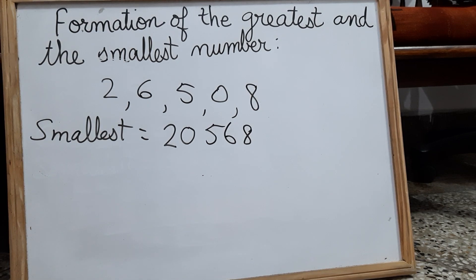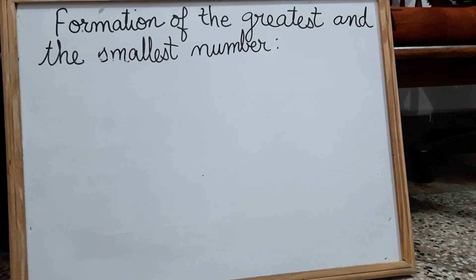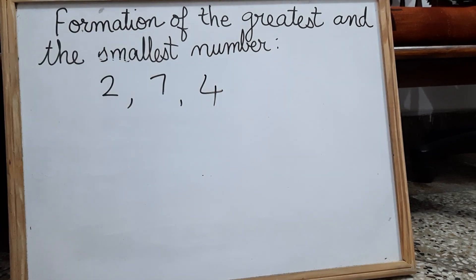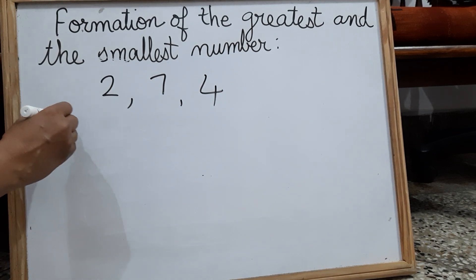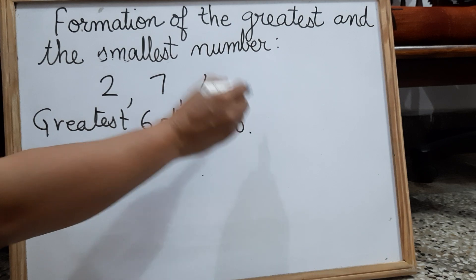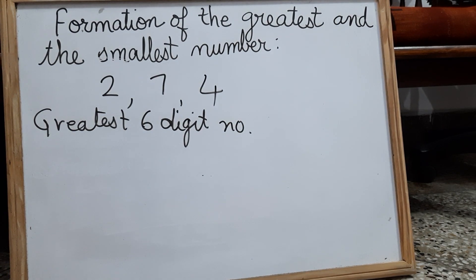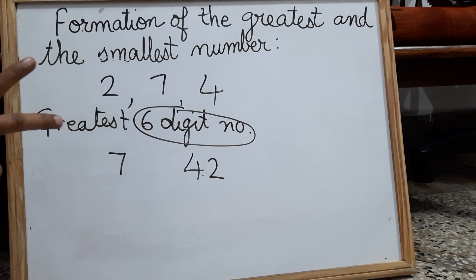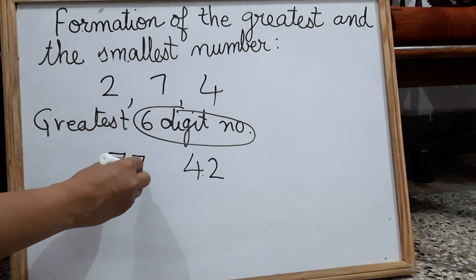Like this, you can form the greatest and the smallest number. Now, suppose only three digits are given — two, seven, and four — but you have to form the greatest six digit number. The rule is the same: start with the greatest digit, which is seven, then go in decreasing order: four and two. But this is only three digits and you need six. So there is a new rule: repeat the greatest digit as many times as needed until you get the six digit number.